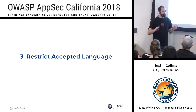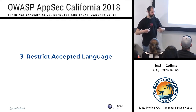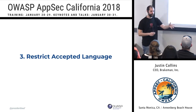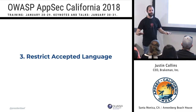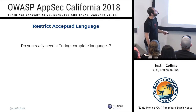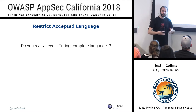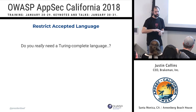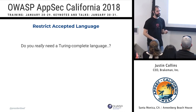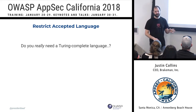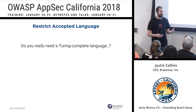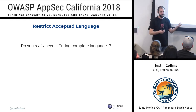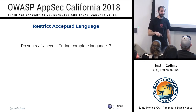Suggestion number three: if you're going to be accepting code — say a database query or shelling out somewhere — do you need the full power of a programming language in that scenario? Do you really need a Turing-complete language, or can you restrict that language somehow? The more you restrict the language you accept, the more you eliminate potential vulnerabilities. A good example is HTML: if you only had HTML but no JavaScript or Flash, you're limiting content injection and can't really execute code.